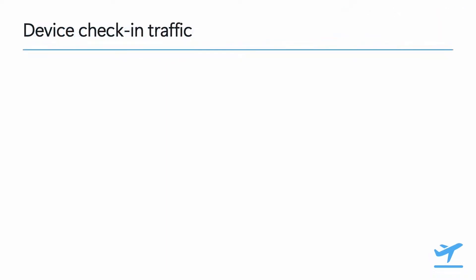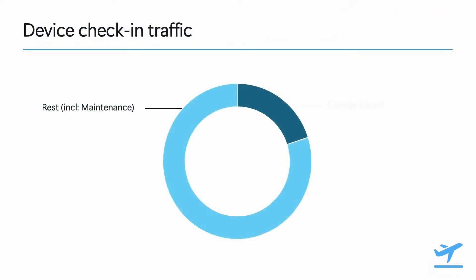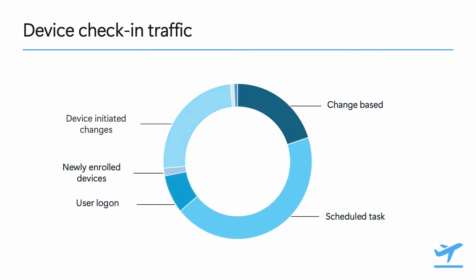Going a bit more in depth into the different types of check-in traffic: at any time, traffic on our check-in gateway is processing anywhere from 15 to 20 percent change-based check-ins, and the rest are usually of the maintenance kind. That makes sense — the normal state is steady state with some changes going on here and there. If we zoom in on those maintenance check-ins, we'll see that there is a lot more to it than just the so-called scheduled task.